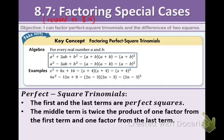Let's look at the key concept box. We're going to focus on factoring perfect-square trinomials. There are two different cases. The first one: a² + 2ab + b² can be factored as (a + b)² or (a + b) times itself. If there is a negative sign involved, then we have a² - 2ab + b², which factors as (a - b)².